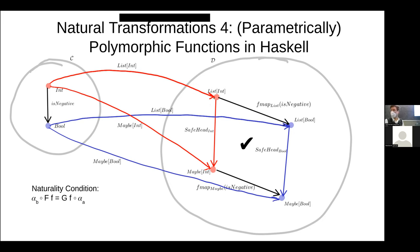We have a parametric polymorphism applying, where we have something called safe head, which can map a list of int to maybe int by extracting the first element of the list if it exists. If we have a list of several elements — maybe it's 23,522 elements — safe head will extract the first. If it's a list of length zero, guess what it will extract? Nothing. Maybe can encode a value, in this case an int, or nothing.